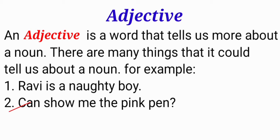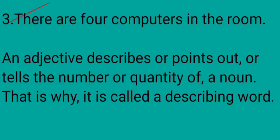Now we will see the second sentence: 'Can you show me the pink pen?' In this sentence, the word 'pink' is used as an adjective. The question arises: which pen? So here 'pink pen' — the noun is pen, and the adjective is telling about that noun.